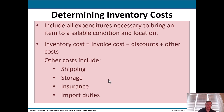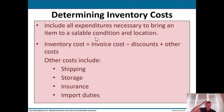Determining inventory costs — this is where you've got to be careful. It's not just the cost of the inventory itself; it's all these ancillary costs you can include too. All expenditures necessary to bring an item to a saleable condition and location are included. Inventory cost is the invoice cost minus any discounts, plus any other costs such as shipping, storage, insurance, and import duties.